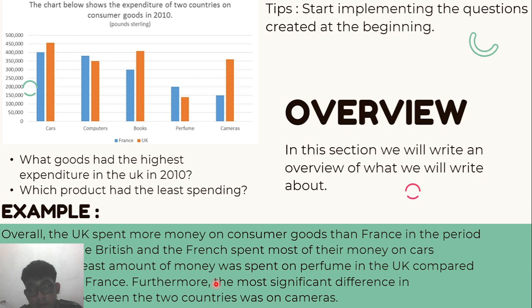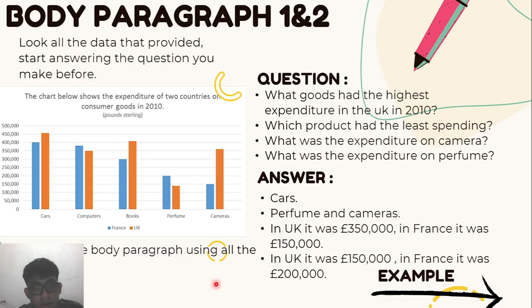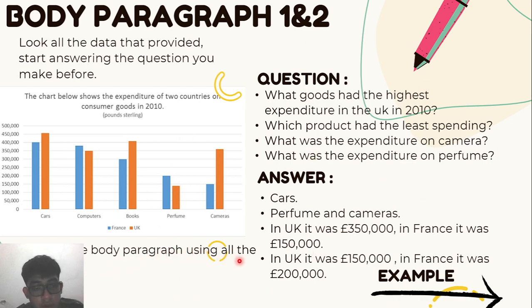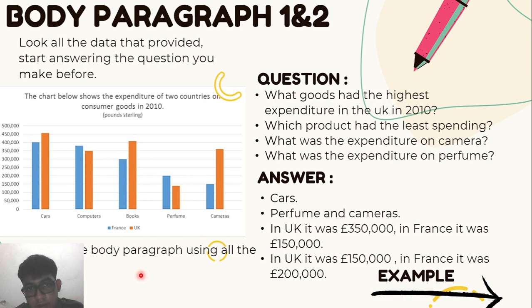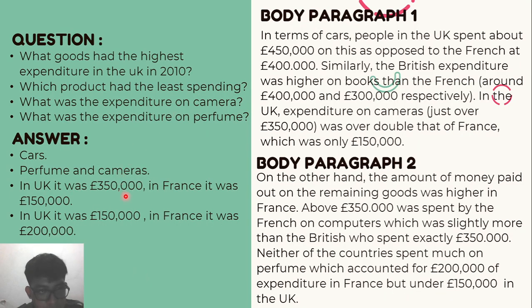Next is the body paragraph — first and second. Look at all the data provided and start answering the questions you made. You can see the questions here and the answers written out. Then start writing the body paragraph using all the answers. Question one: what goods had the highest expenditure in the UK in 2010? The answer is cars.